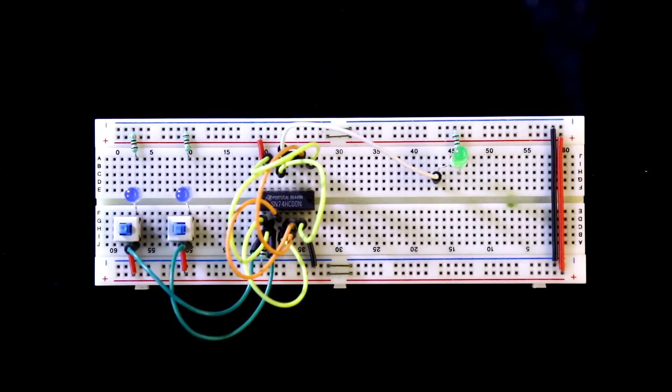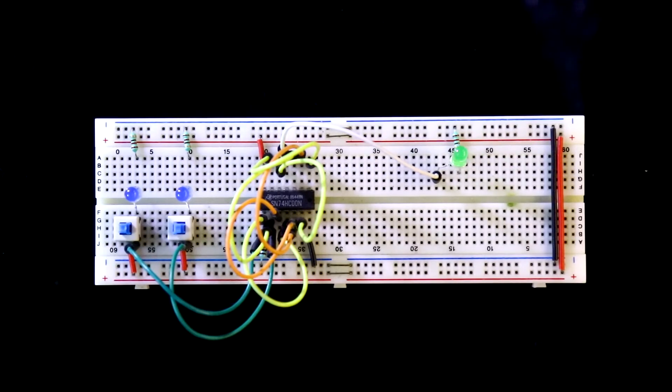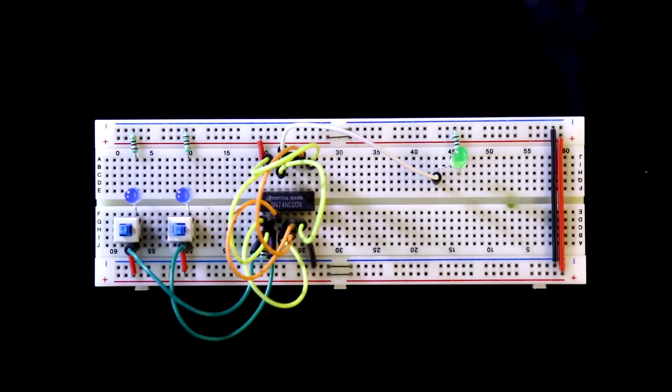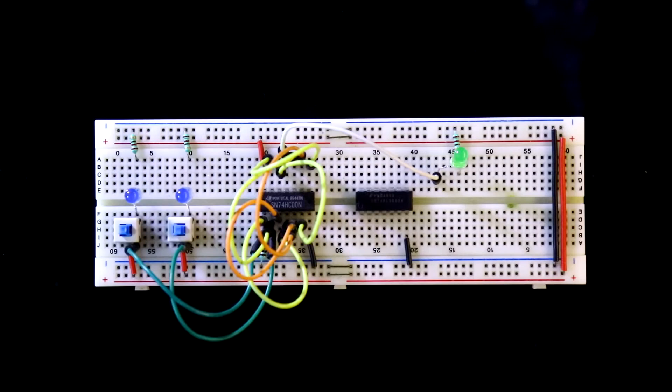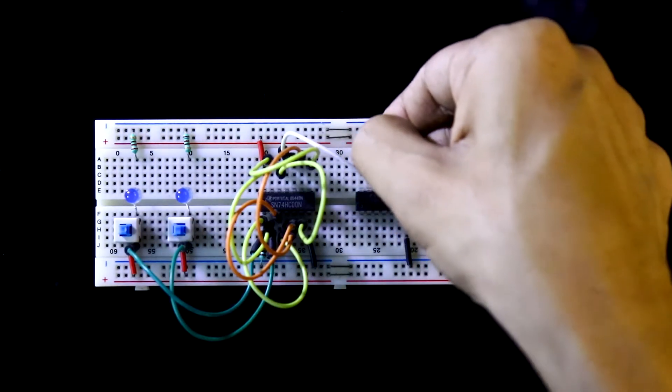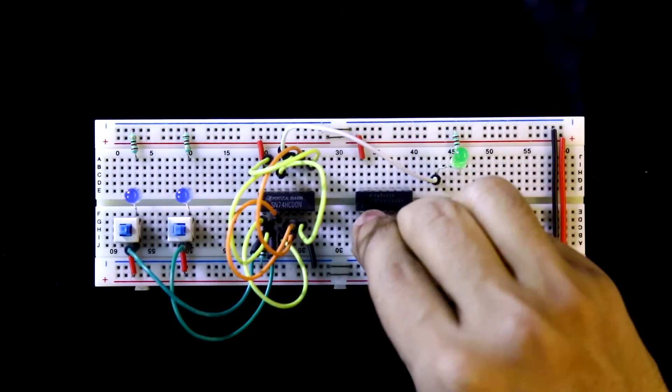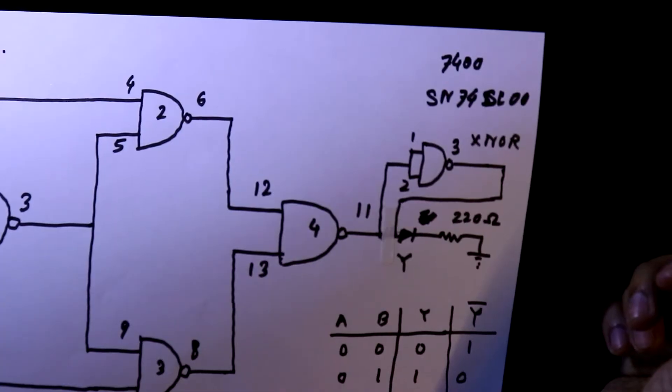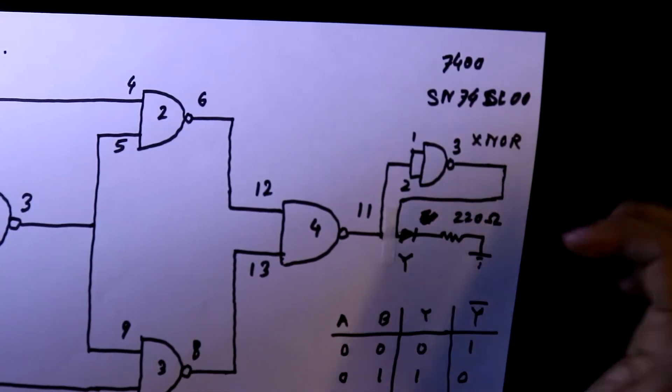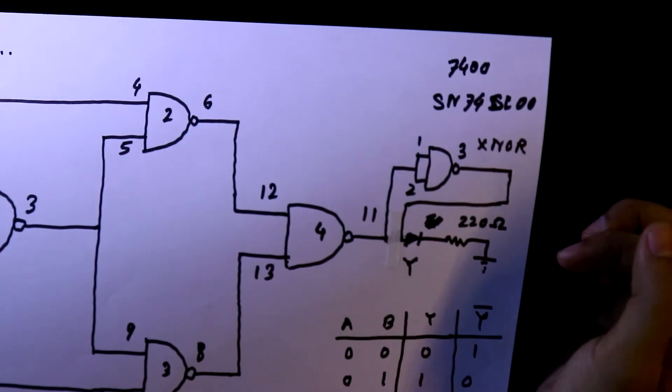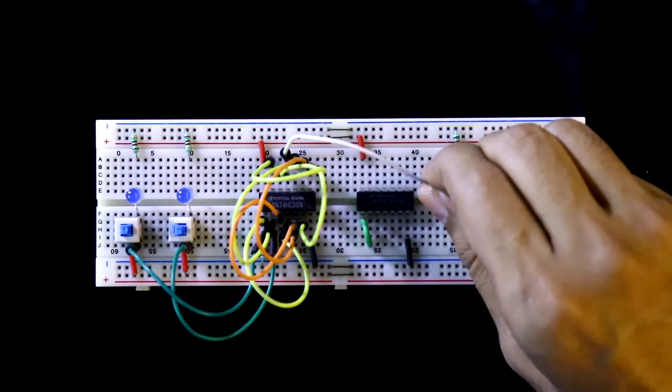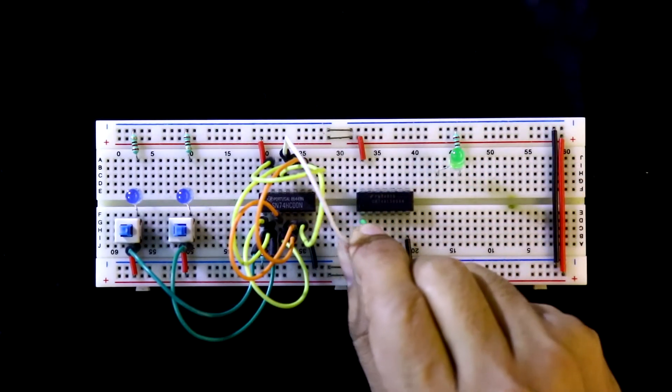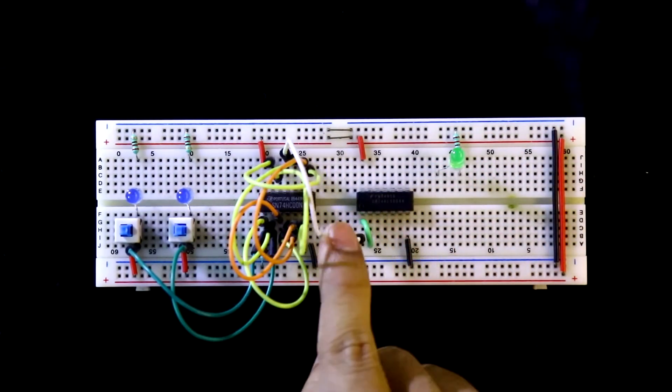In the last video we have seen till this. Now we need another NAND gate IC 7400. Pin number 7 is connected to ground. Pin number 14 is connected to the positive rail. Pin number 1 and 2 are connected together. Pin number 11 of first NAND gate is connected to pin number 1 and 2 of the second NAND gate.